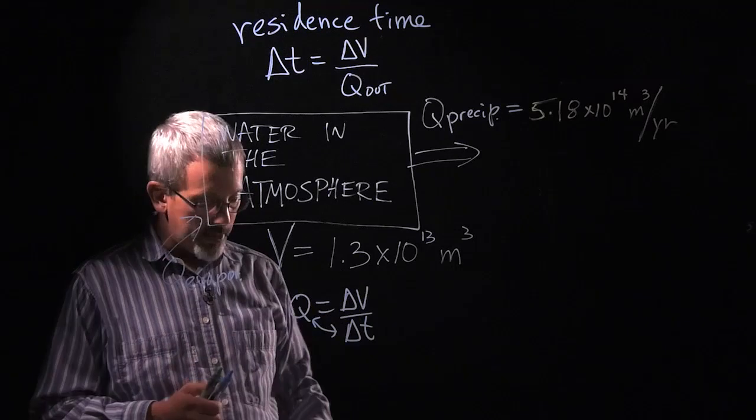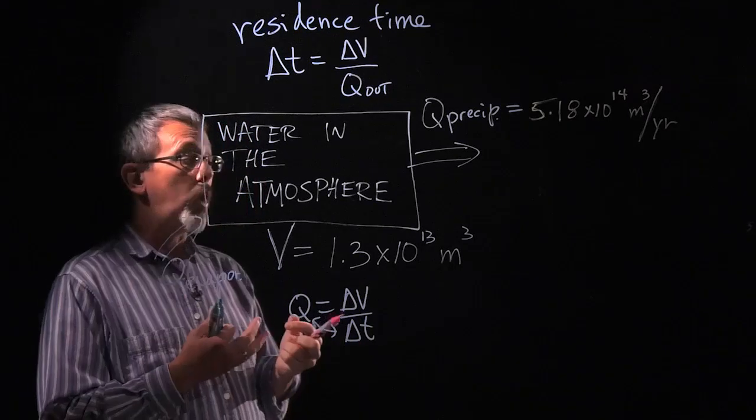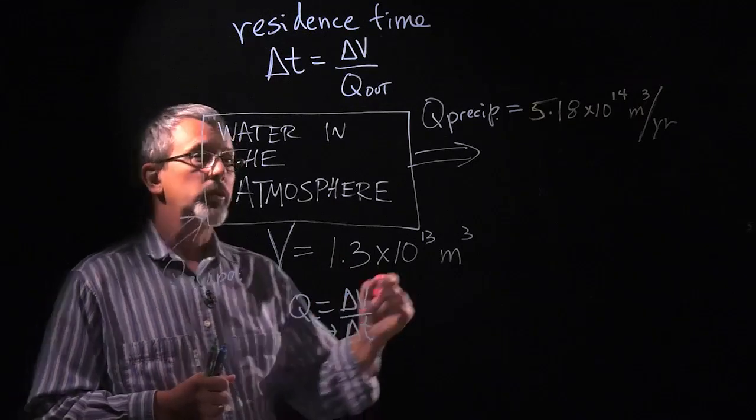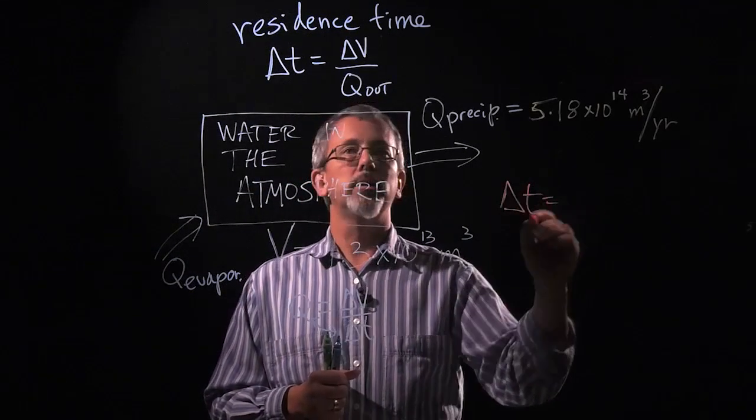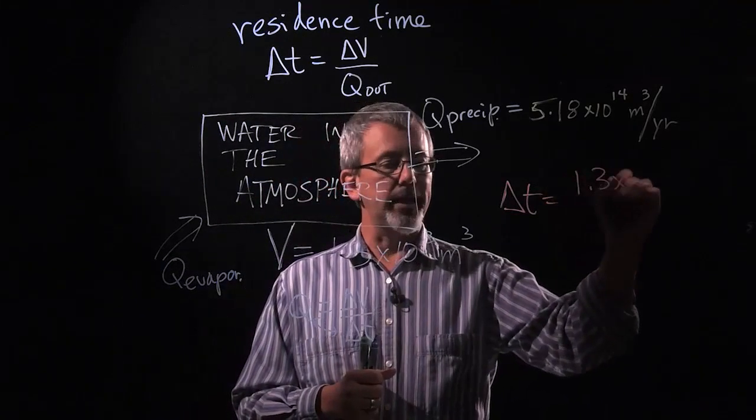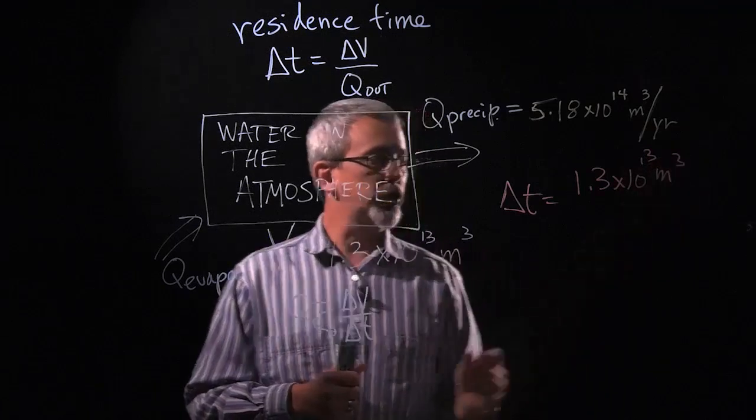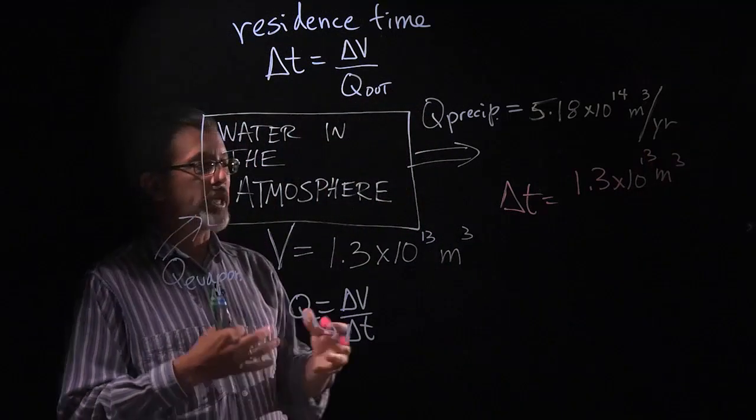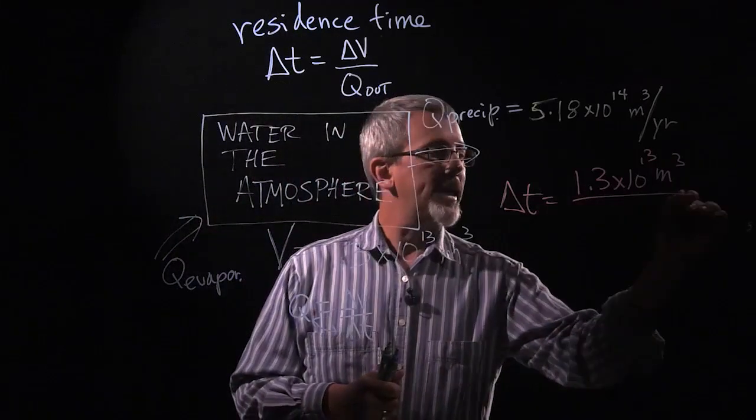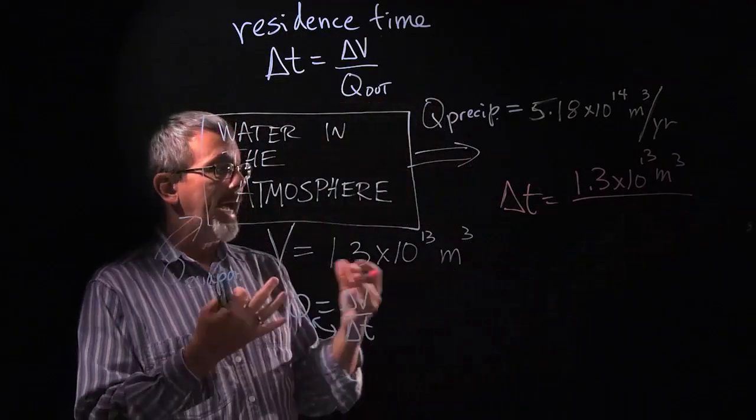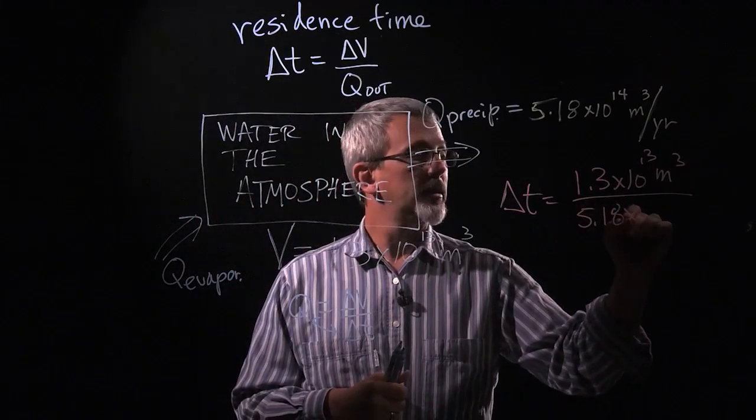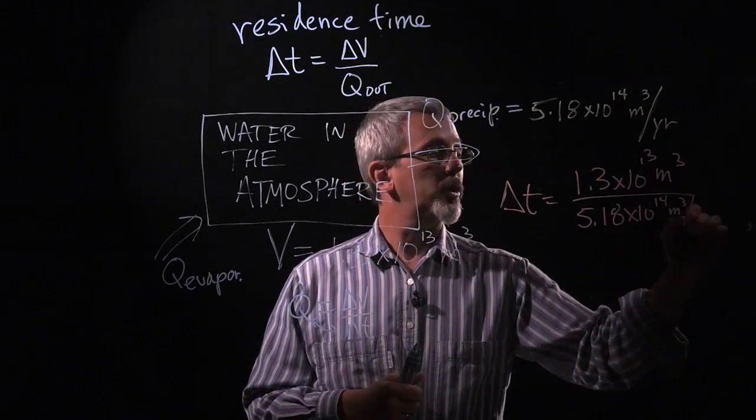So let's go ahead and calculate the residence time. How long does water, on average, stay in the atmosphere? Well, if I plug in the two values here, I take the volume of 1.3 times 10 to the 13th meters cubed. That's the change in volume if I want to change all the water in the atmosphere out. And I divide that by my flow out, in this case, the precipitation, of 5.18 times 10 to the 14th meters cubed per year.